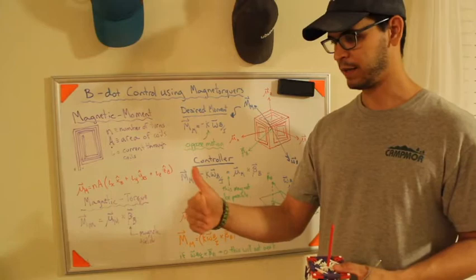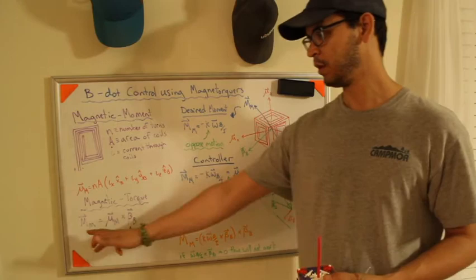And the right-hand rule is your friend. So if you take mu, the magnetic moment, crossed with your magnetic field, your thumb will point in the direction of your magnetic torque.